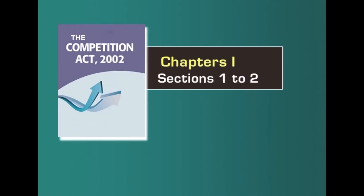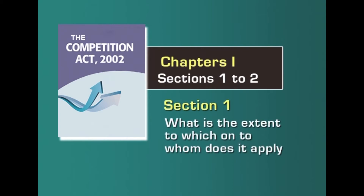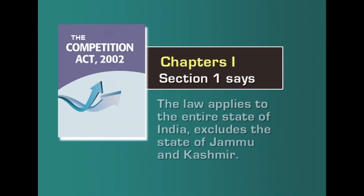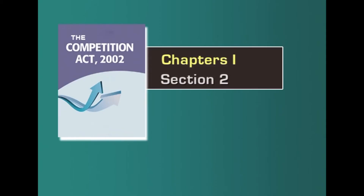Chapter 1 has sections 1 to 2. Section 1 lays down the extent to which or to whom the Act applies. When a law is made, we must know who is being governed under it. Section 1 says the law applies to the entire state of India, excluding the state of Jammu and Kashmir, which earns a special status with laws different from those applying to the Union of India. Section 2, as I said, contains the definitions, which are important because based on definitions we understand what is anti-competitive, what is an agreement, and get a basic understanding of each term.